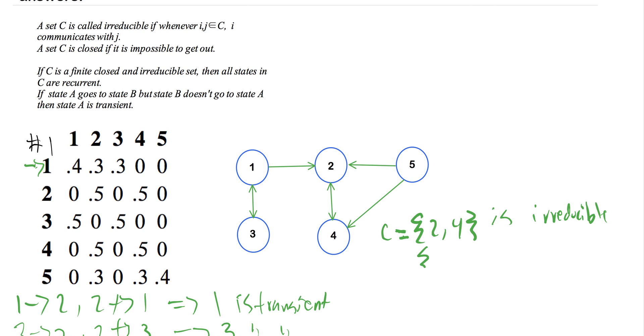So two, four is closed. Now by our third definition here, if C is a closed and finite irreducible set, then all states are recurrent. So simply by that definition, we're saying two and four are recurrent.